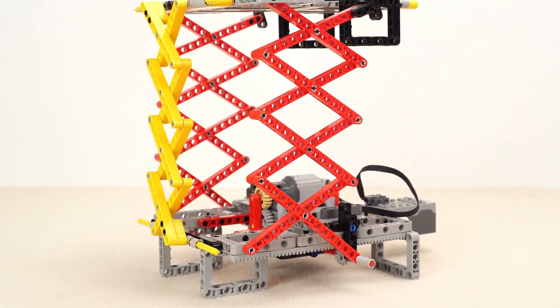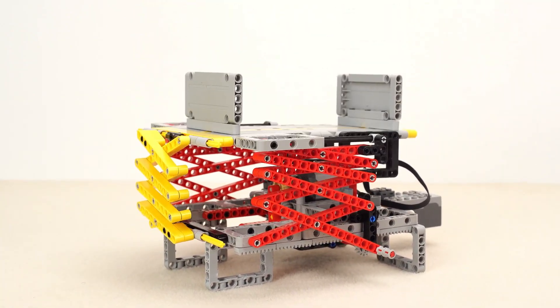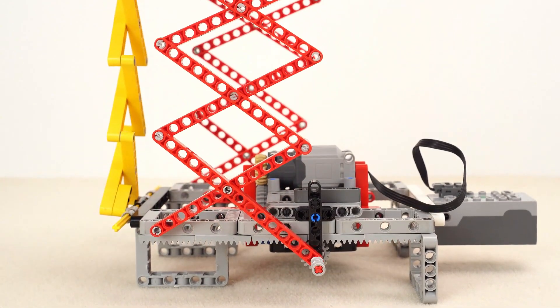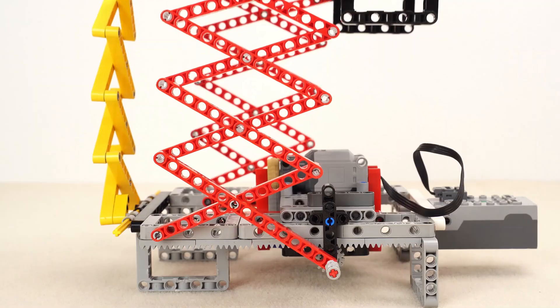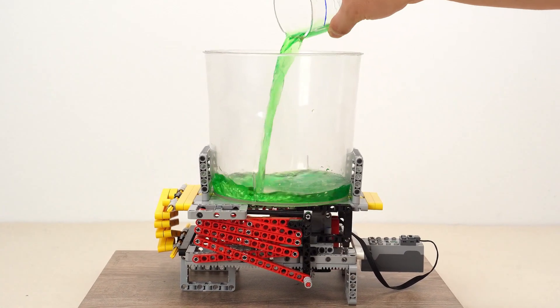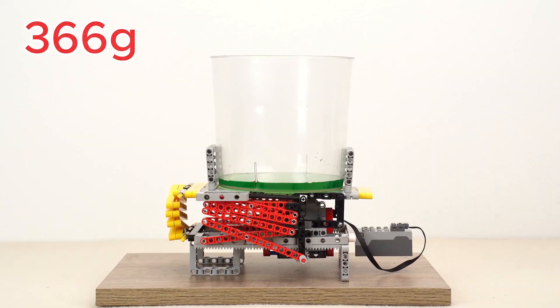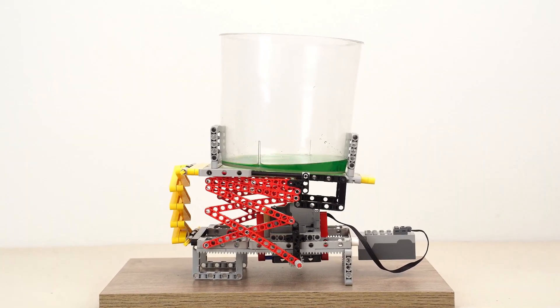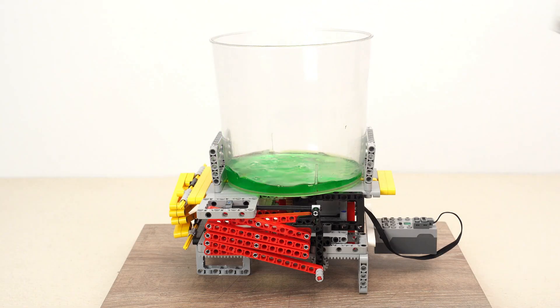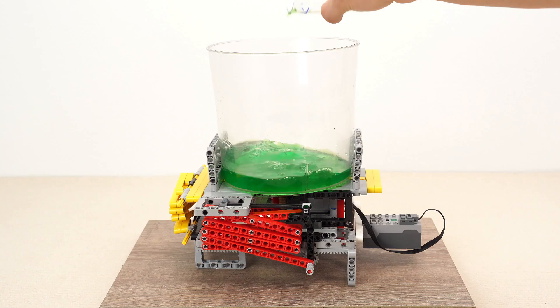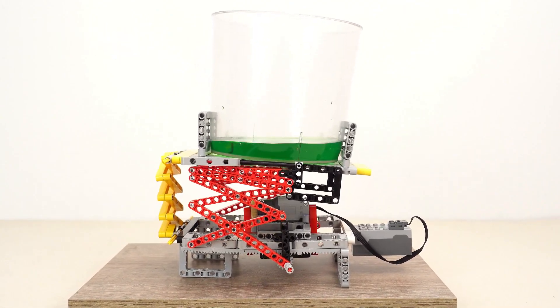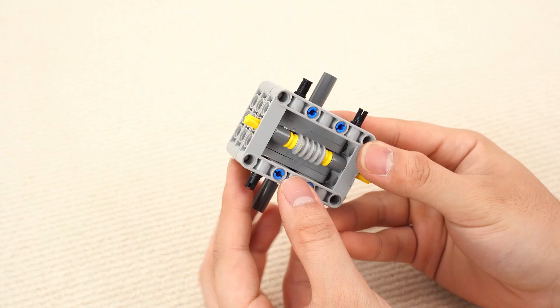Let's test it. Raising and lowering smoothly. This time, it has to lift 366 grams. Oh no, the screws came loose. After fixing the frame, let's try a 580 gram water jug. Not very stable. Oh no, it spilled.